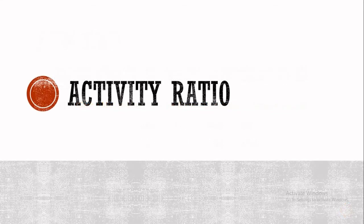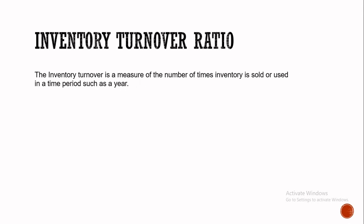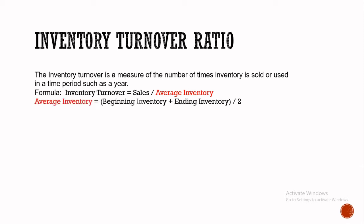Let's move on to activity ratios. The inventory turnover ratio is a measure of the number of times inventory is sold or used in a time period, such as a year. The formula is: inventory turnover equals sales divided by average inventory. The formula for average inventory is: beginning inventory plus ending inventory, divided by 2.